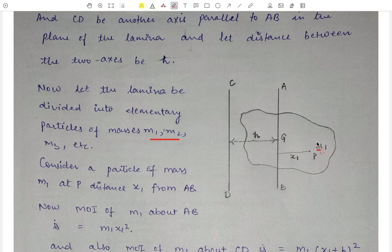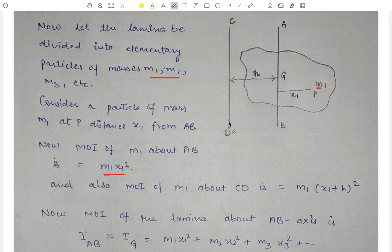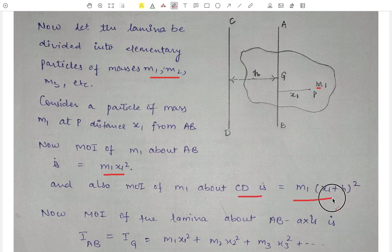The moment of inertia of this particle about the AB axis is equal to the mass M1 into the square of its distance from the axis, that is M1·x1². Since point P is at a distance x1 from the AB axis and AB is at a distance h from the CD axis, the moment of inertia of M1 about the CD axis is equal to M1 into (x1 + h)².